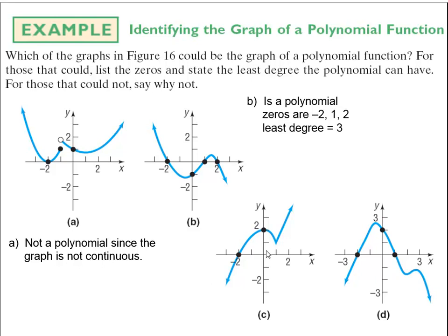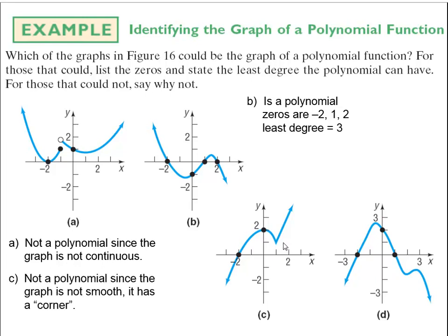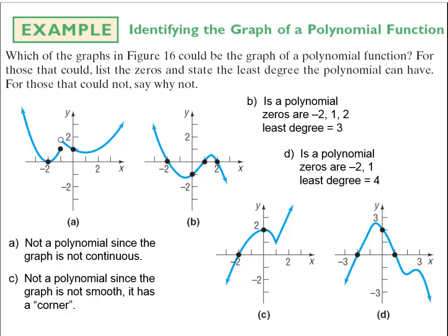Letter c cannot be a polynomial because it's not smooth — it has a sharp corner, even though it is continuous. Letter d is relatively smooth and continuous, so it might be a polynomial with zeros at negative 2 and 1. It has 3 turning points, so it could be a degree 4 polynomial. What's valuable about this problem is that we don't have equations — we're using our tools of analysis to analyze graphs, which is exactly what this section develops.